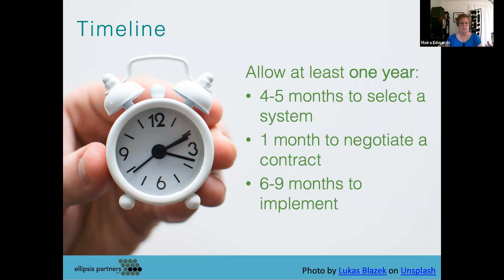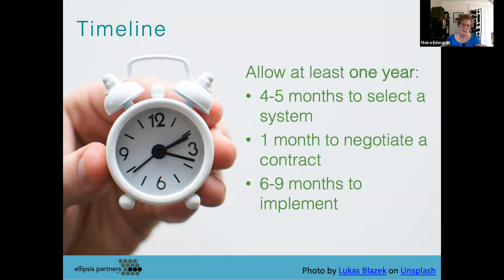You issue the RFP and get proposals back and read those. By the third month you're doing first demonstrations, then deeper ones. By the fourth month you're doing really deep dives, reference checks, and maybe starting to look at contracts or going to the board for approval. You're four months in before you're pretty sure you've found the system you need. Then contracting takes a month — I don't know why it always takes at least a month, but even for the simplest system it does.